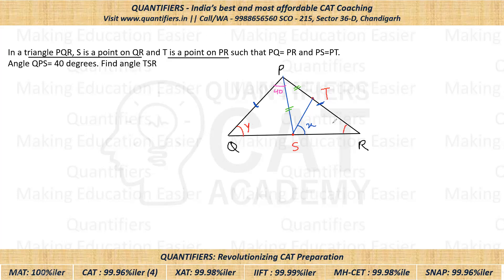Now look at triangle PST. In triangle PST, we have two sides equal — PS is equal to PT. So two angles will be equal as well. This particular angle at S in triangle PST will be equal to the angle at T — again by the isosceles triangle property, two sides equal means two angles equal.